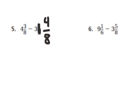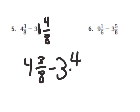So I'm going to rewrite that as: four and three eighths minus three and four eighths. Now, there's a problem here. I cannot take four eighths from three eighths — I cannot subtract four from three and get a positive number.